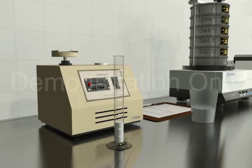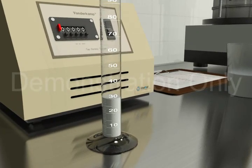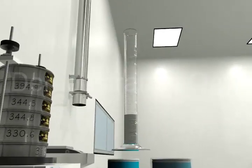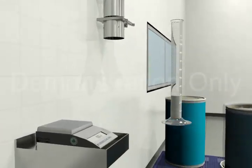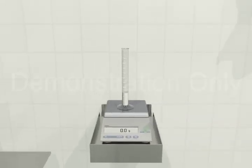30 milliliters of compacted product is placed into a tared graduated cylinder. The cylinder with material is then weighed to determine the net weight of the material.